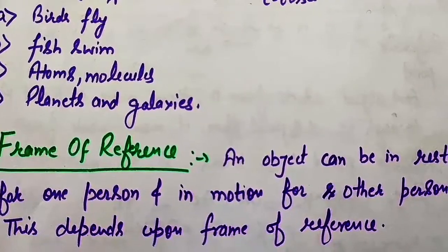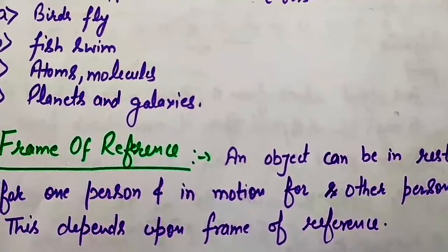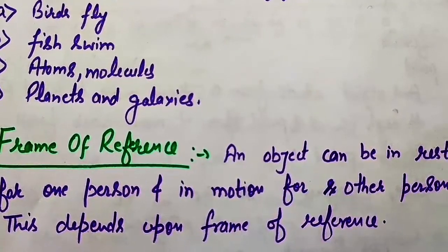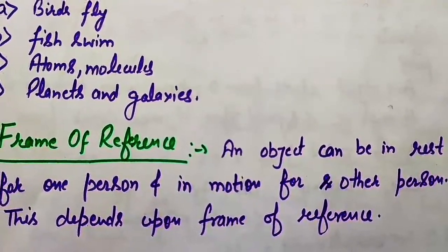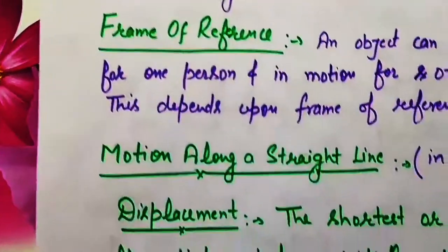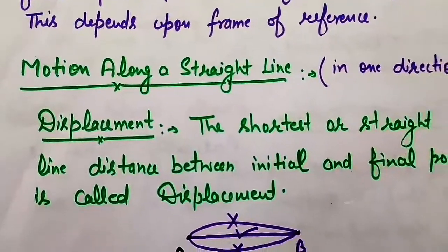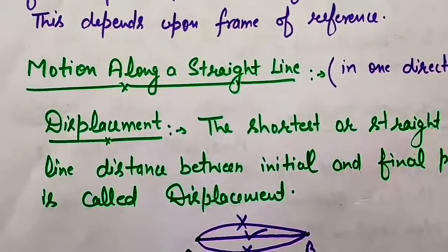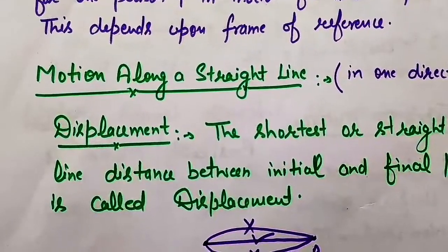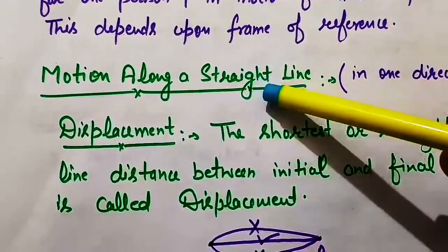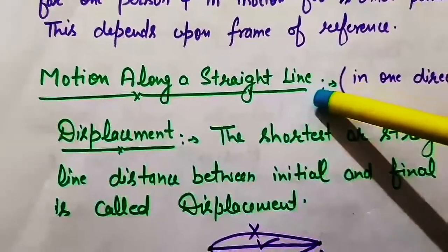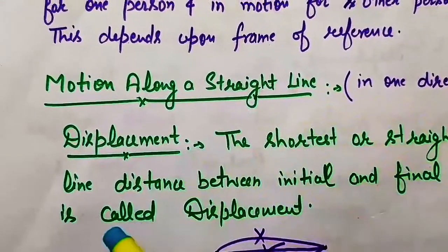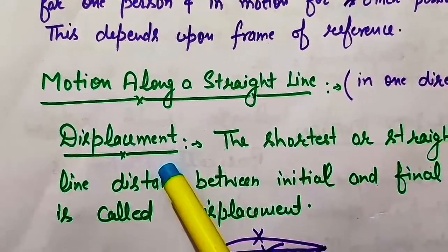Frame of reference is very important when we study about motion. The basic type of motion is motion in a straight line. Straight line means in one direction — when an object moves in a single direction we say that motion occurs in a straight line. Before studying motion along a straight line, there are two very important terms you need to know: one is displacement and the other is distance.